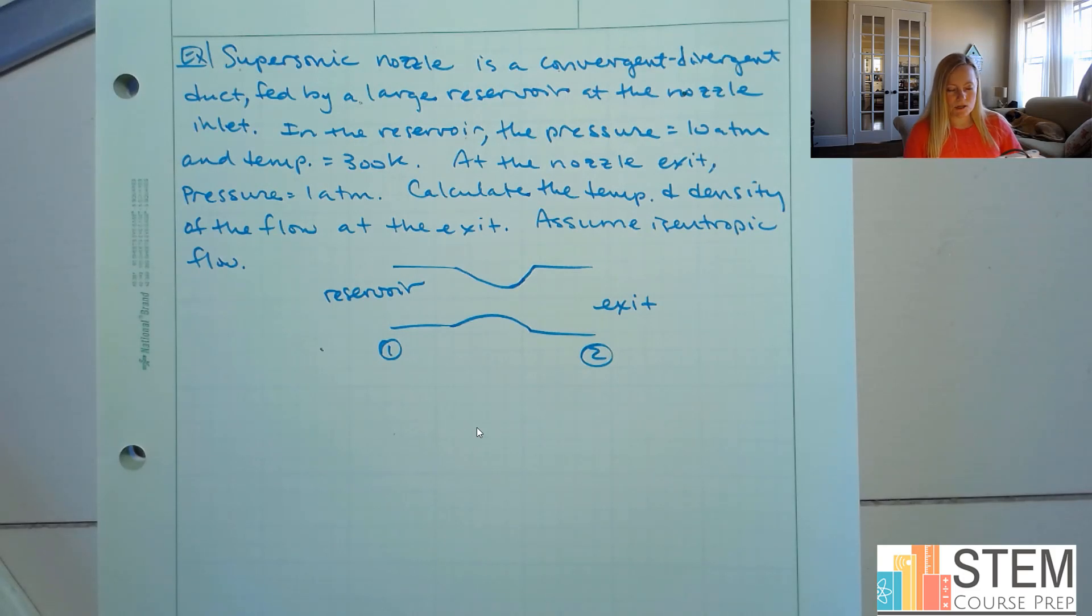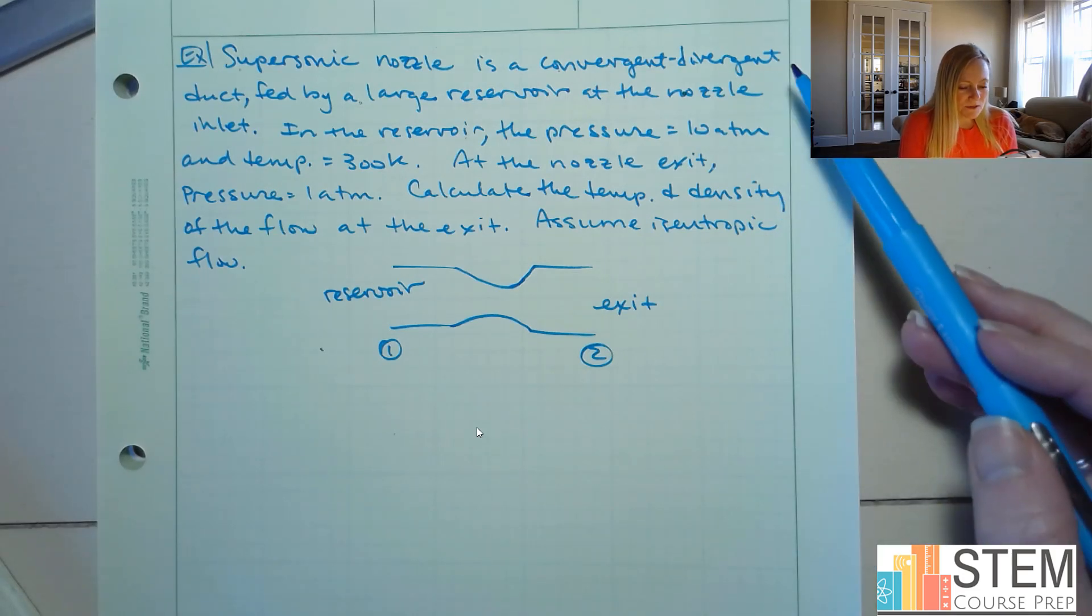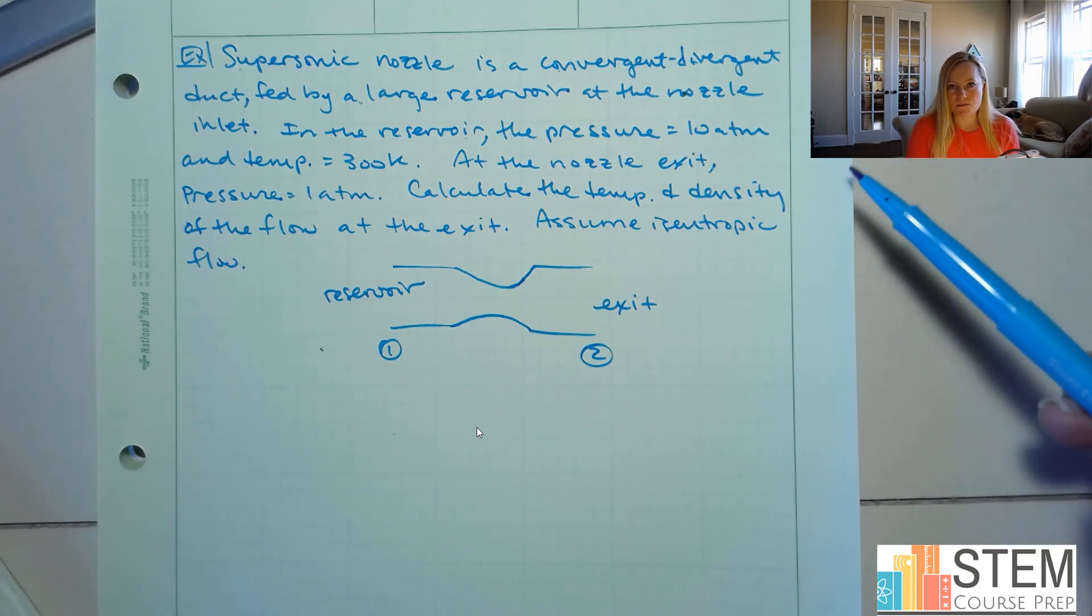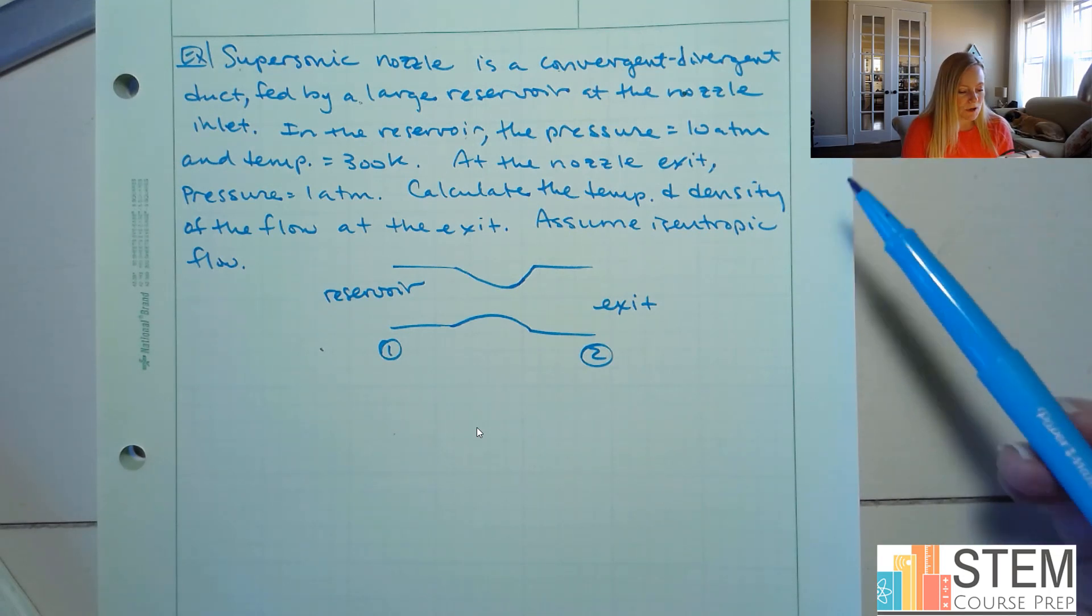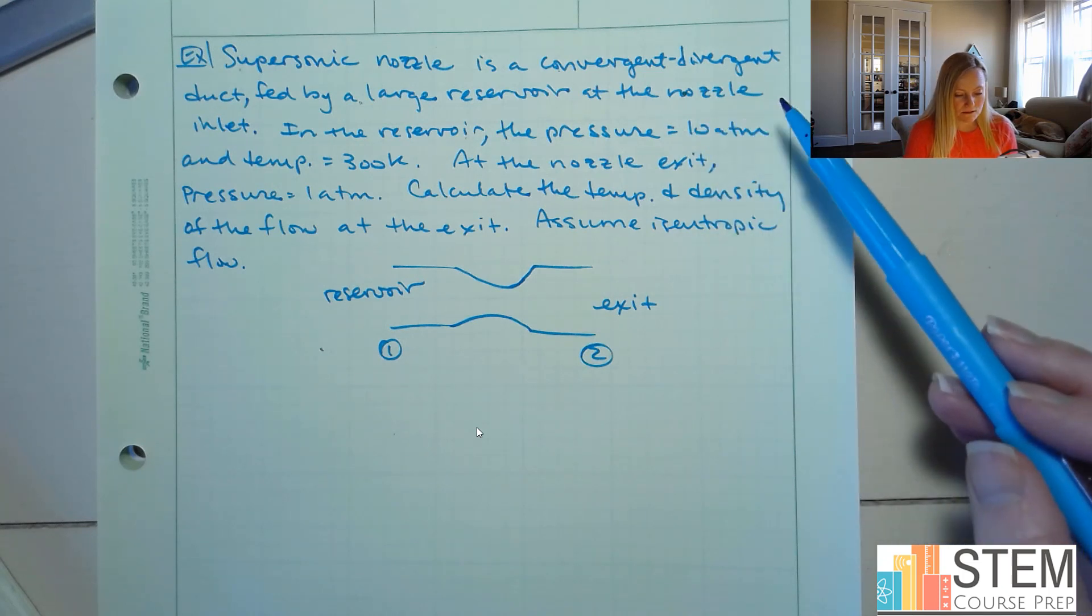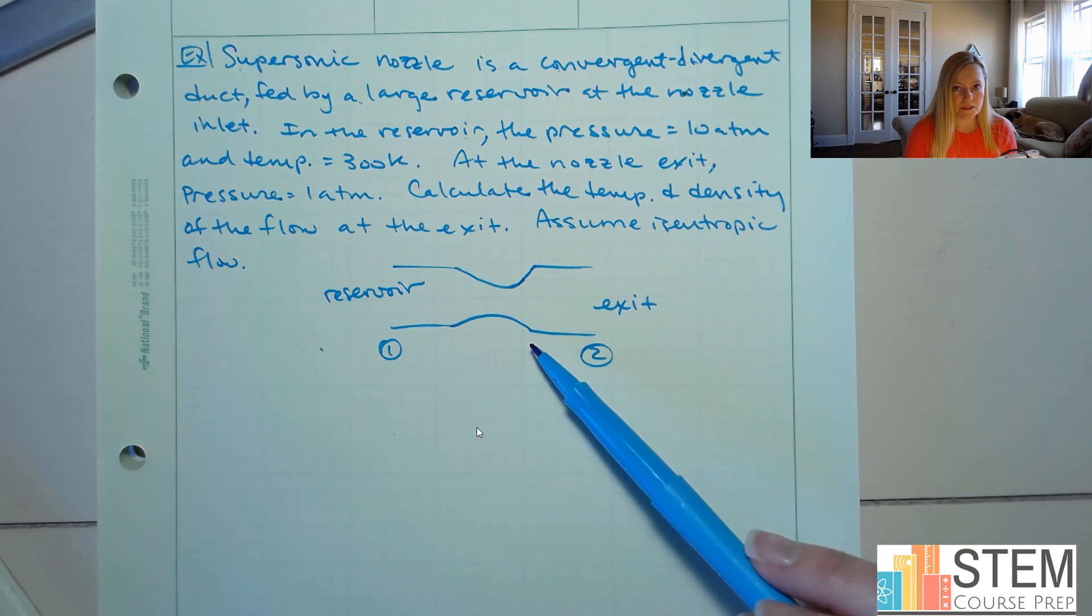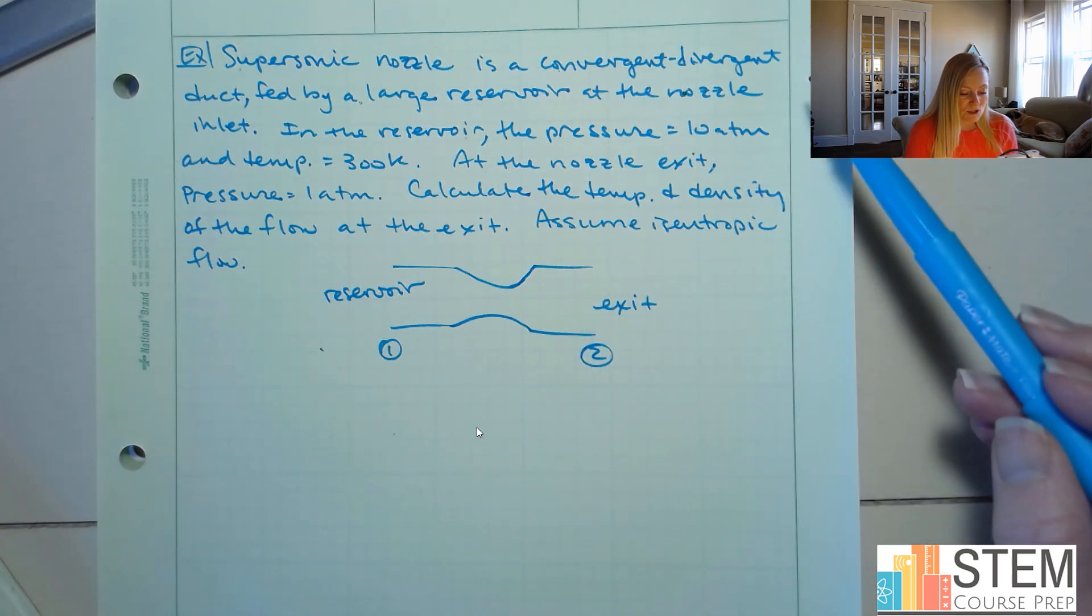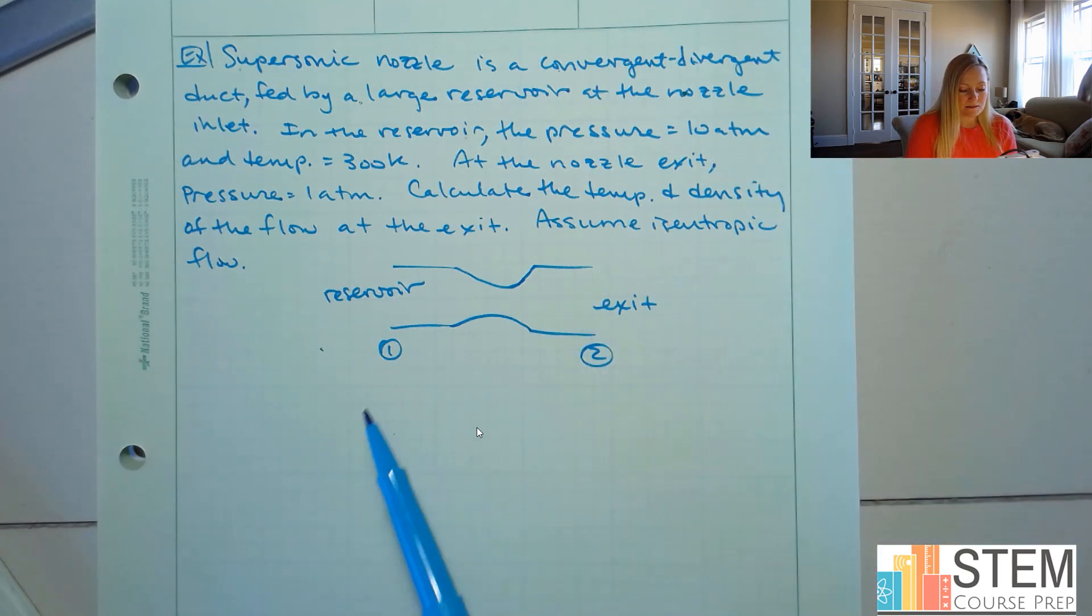Here we are with our example I promised y'all. Okay, so let's look at this one. I already wrote it out, so you might want to pause this and write out the problem statement so you have it in your notes. But this one says we've got a supersonic nozzle that is a convergent divergent duct, so it looks like this, that's fed by a large reservoir at the nozzle inlet. So here's our reservoir over here.